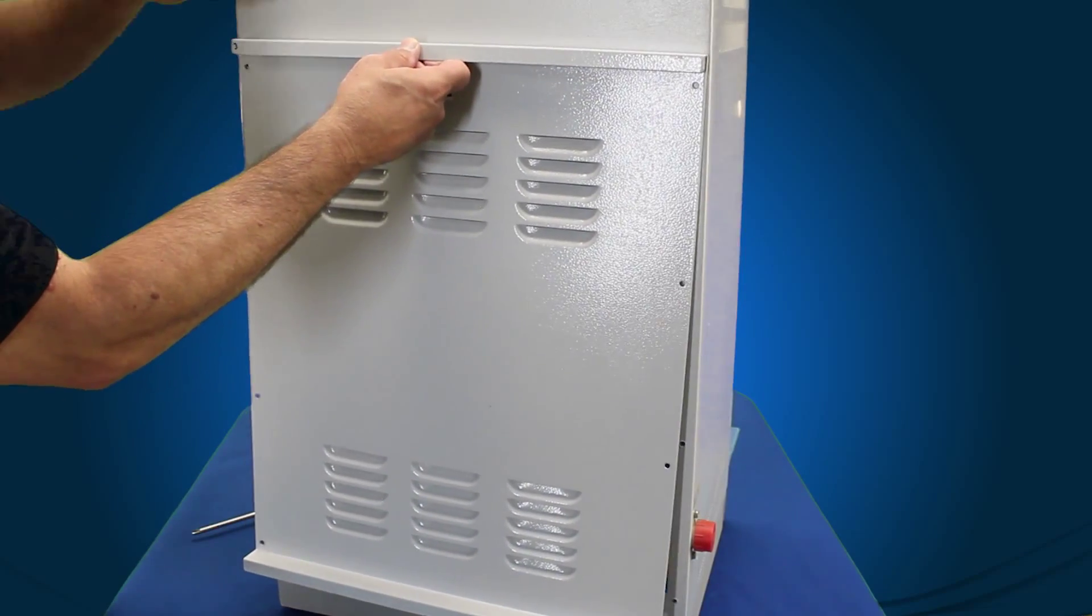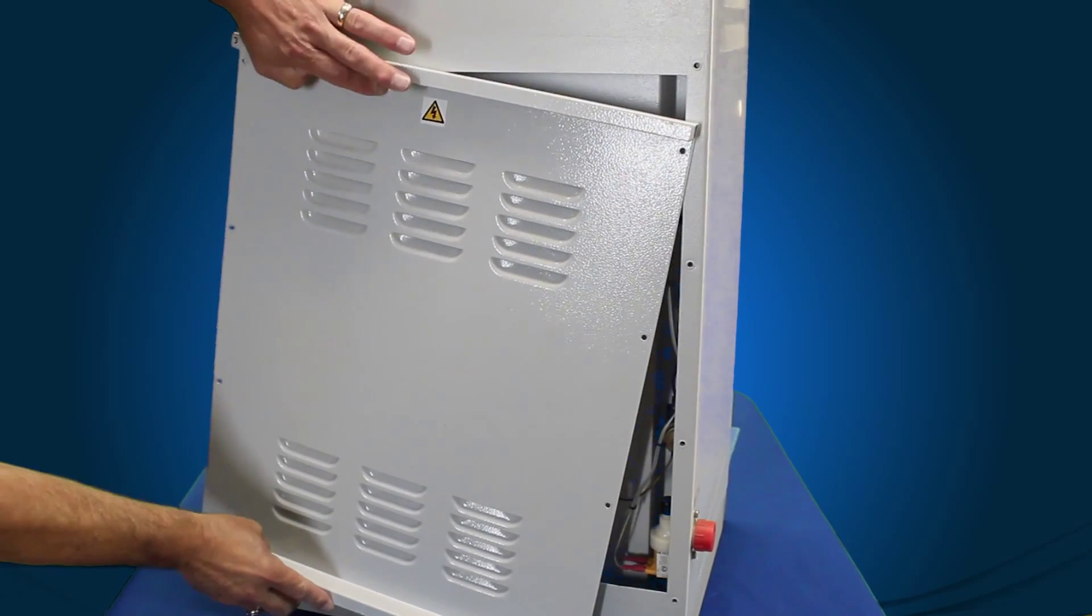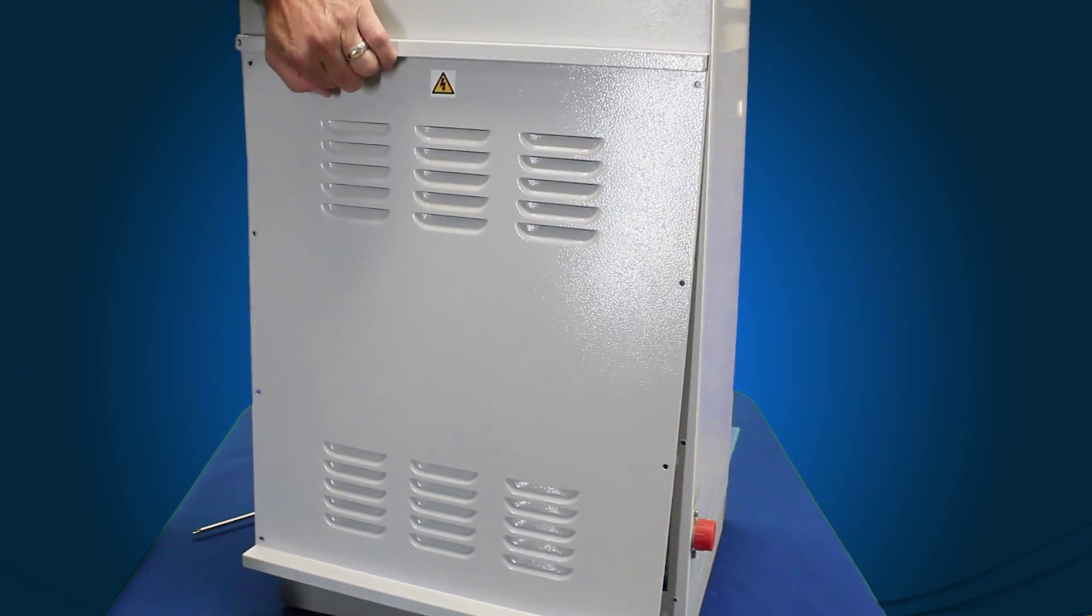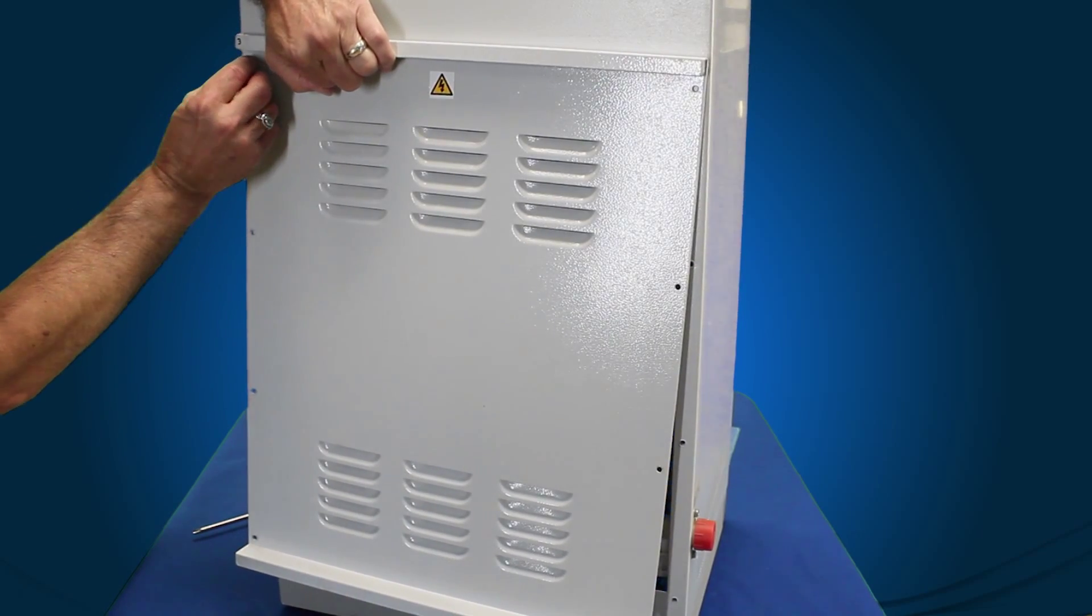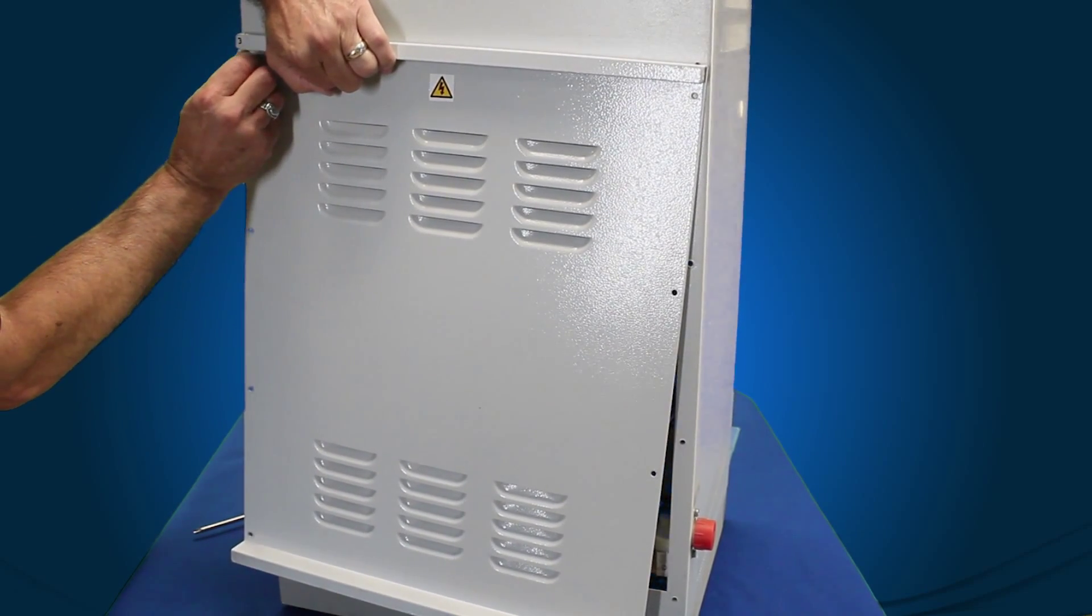Now that we have the thermistor routed back through the back of the unit, attached to the PC board, and the right side panel is back on, now we're going to go ahead and reattach the back panel onto the unit.